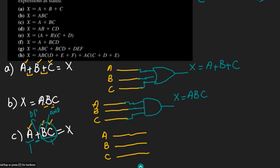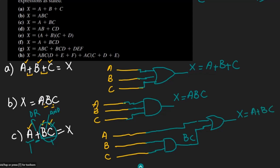The AND gate takes b and c as inputs, giving us bc. Then this product bc is provided to the OR gate along with input a. The output of the OR gate equals a + bc, which is the answer for part C. This is the circuit which has to be implemented.